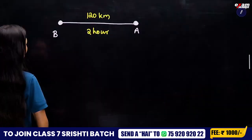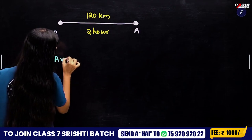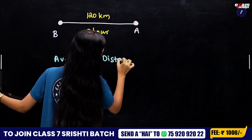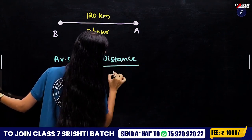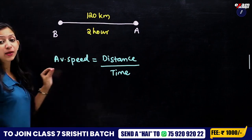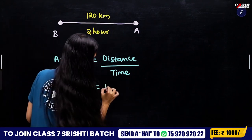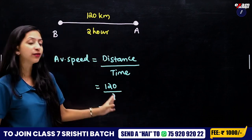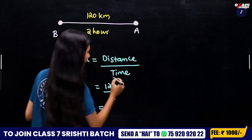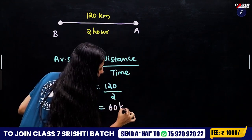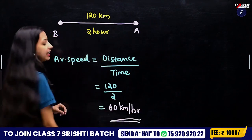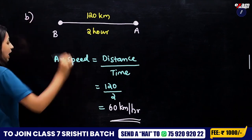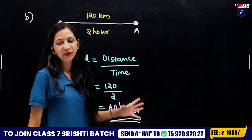What does average speed mean? Average speed is equal to total distance divided by total time. Distance divided by time is 120 km divided by 2, which gives us 60 km per hour.